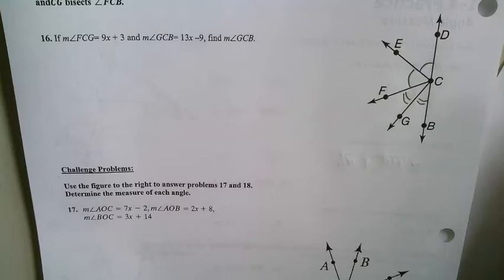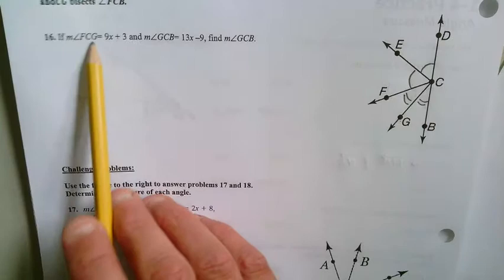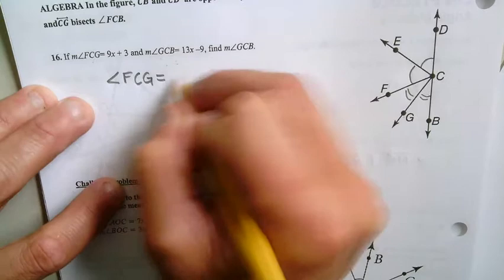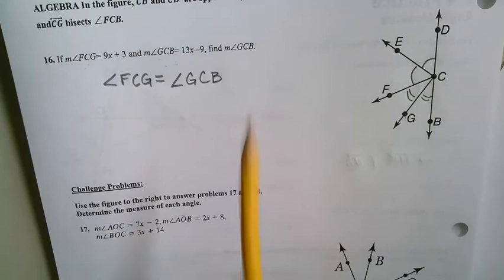I'm going to just go ahead and write this down. F, C, G is equal or congruent to angle G, C, B. From there, you should be able to plug in the expressions and be able to go ahead and solve for X and then plug it back in to get the measure of angle G, C, B.